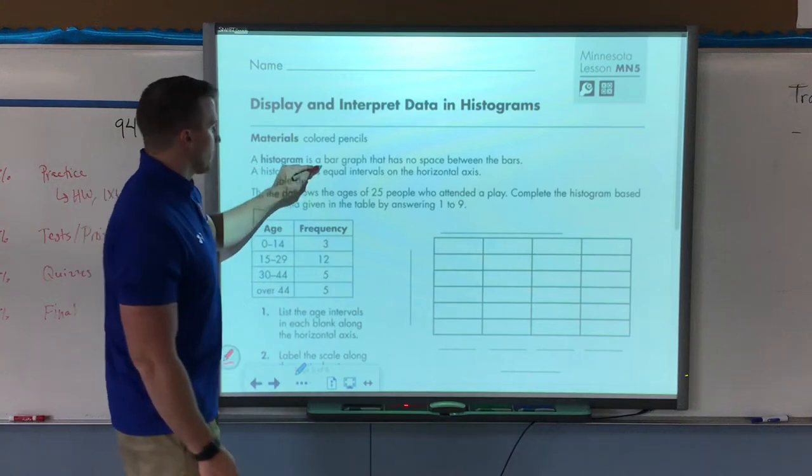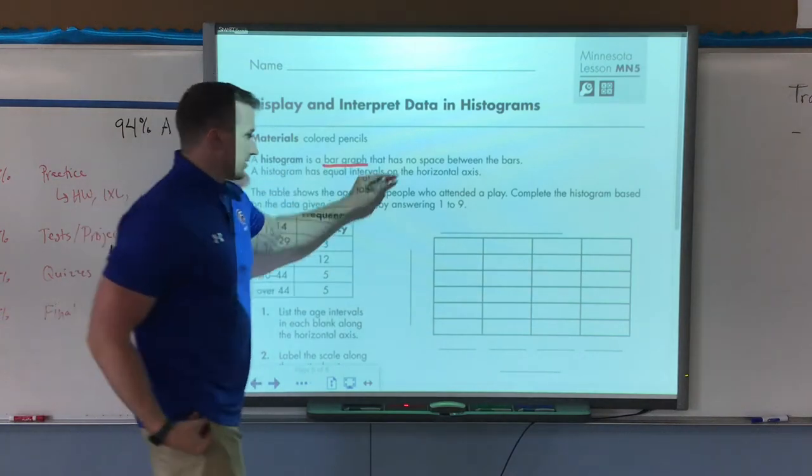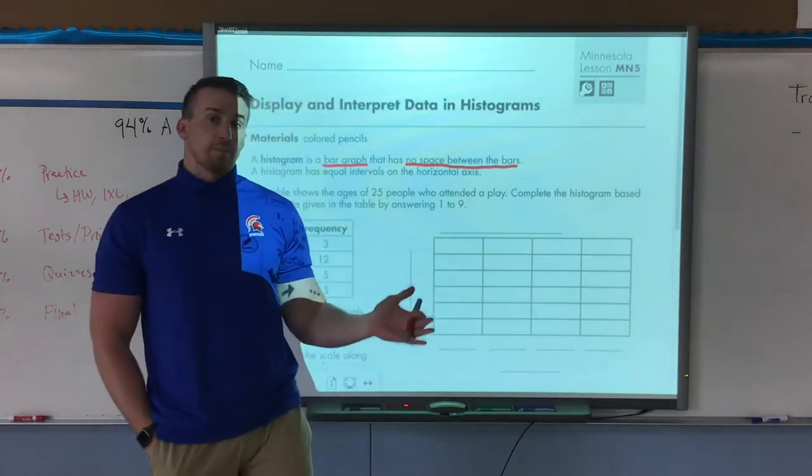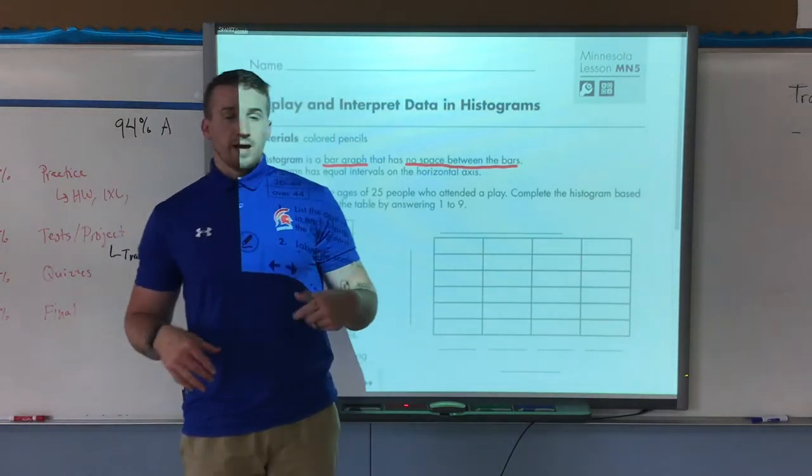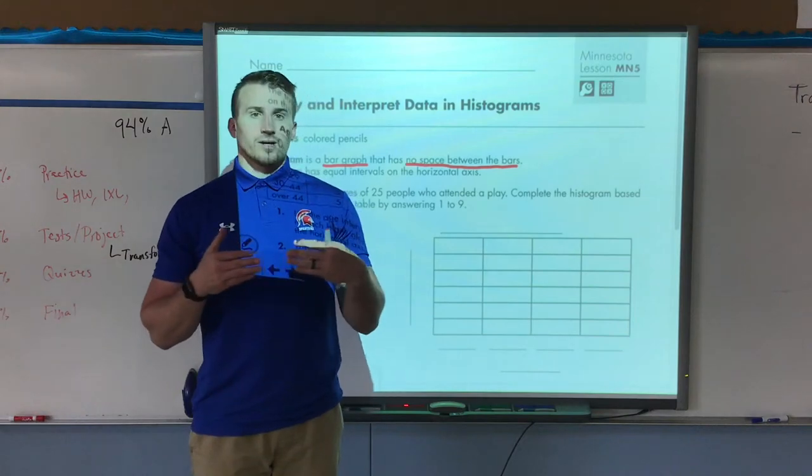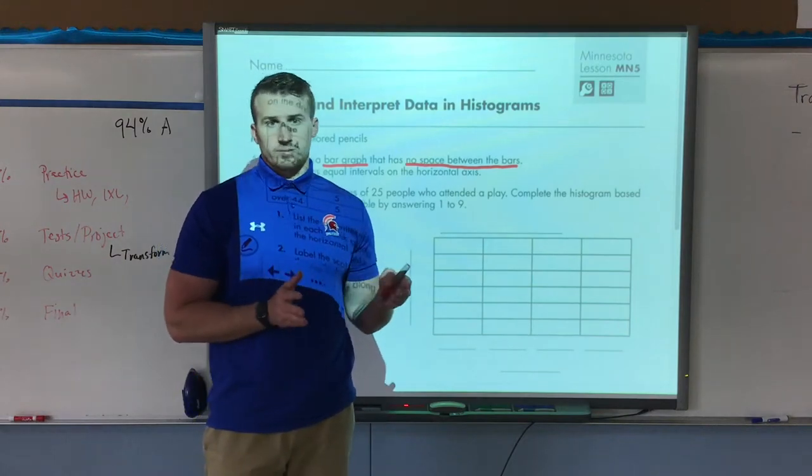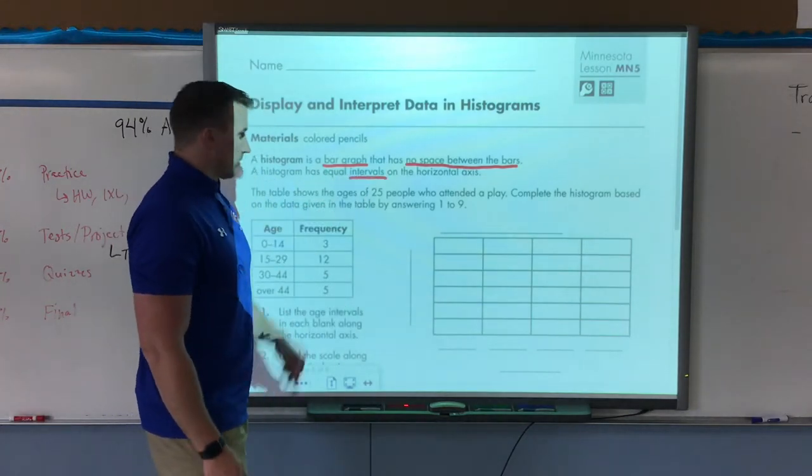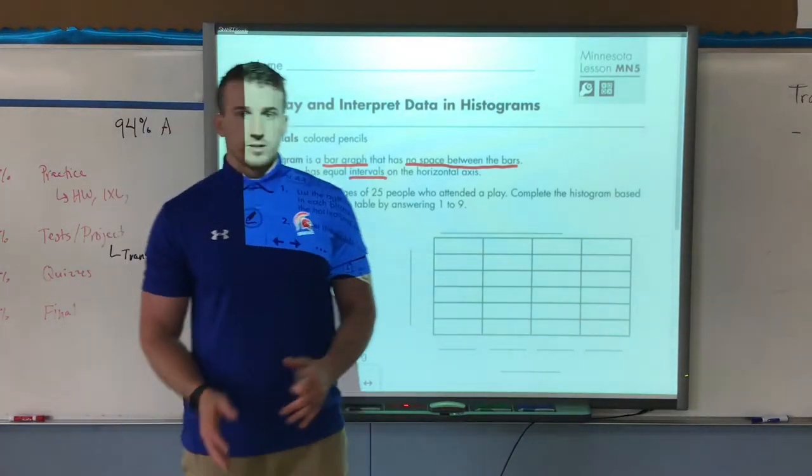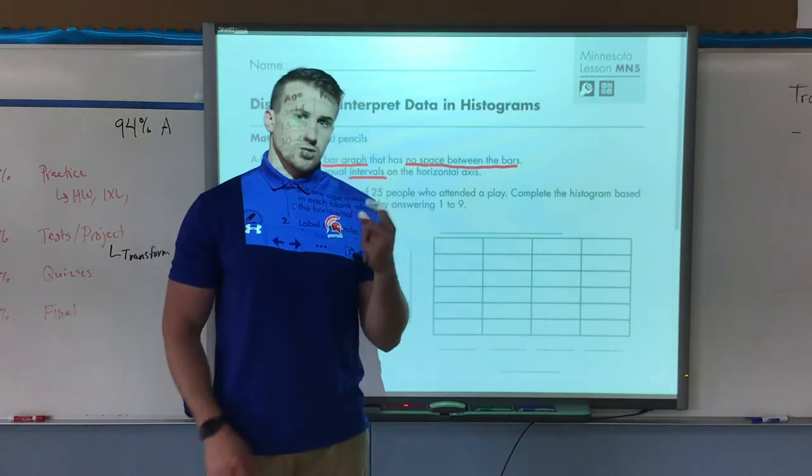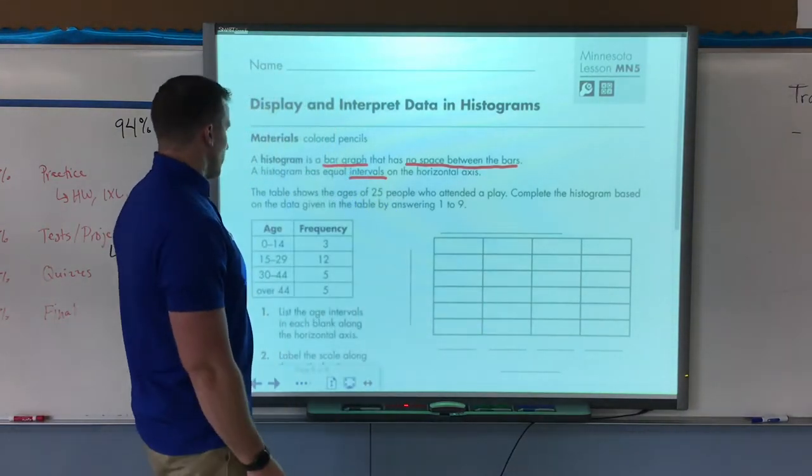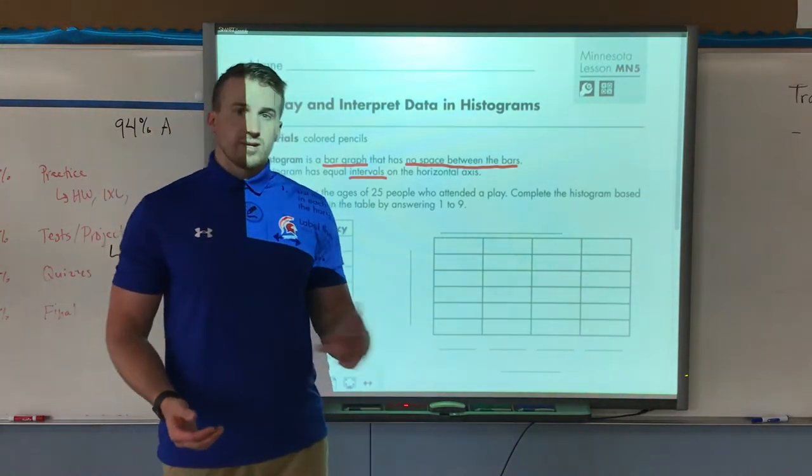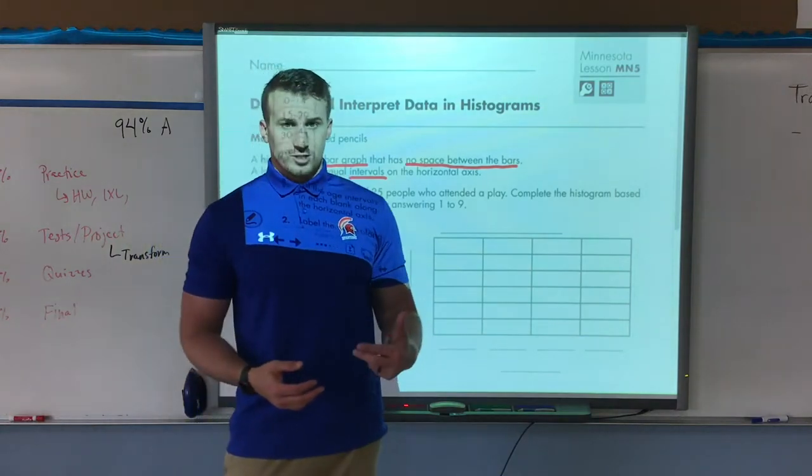We're talking today about histograms. So a histogram is a bar graph that has no spaces between the bars. A histogram also has what we call equal intervals. Intervals means a range of more than just one specific value. We are going to learn how to interpret histograms to answer questions about them and how to create a histogram ourselves.